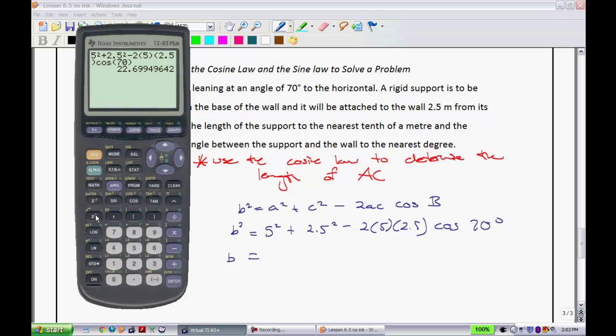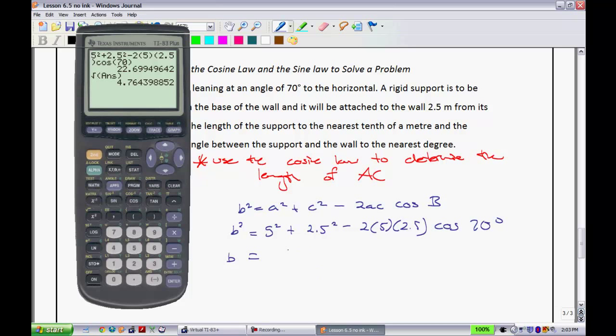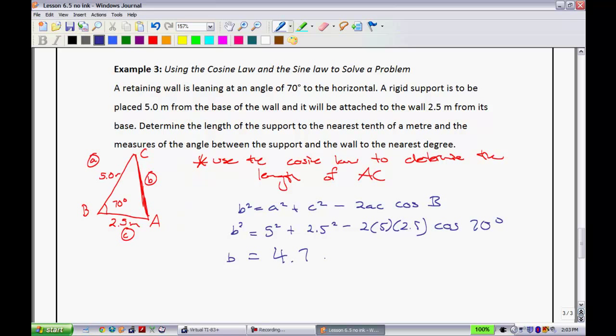And we get 22.69. And then lastly I need to take the square root of that answer. When we do that, we find approximately that b is equal to 4.7643. I'll leave a couple dots right there to show that goes on forever.